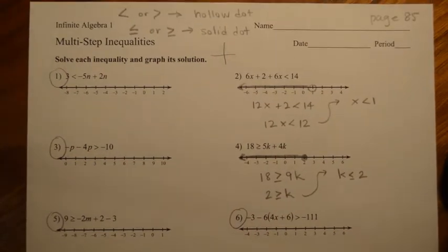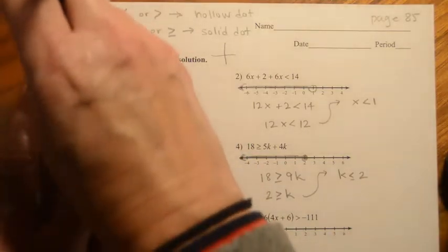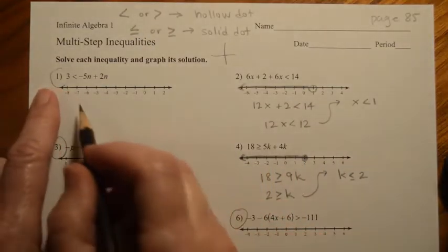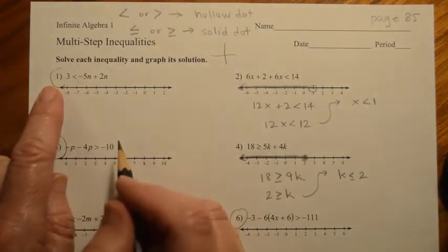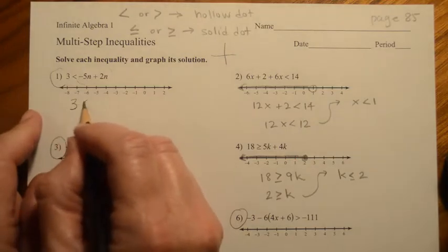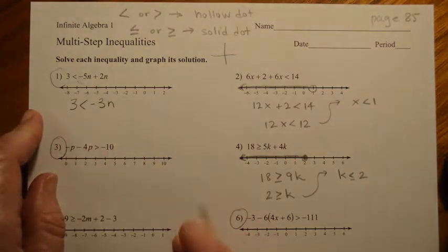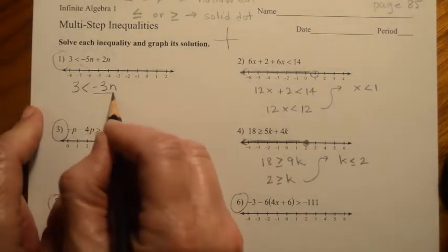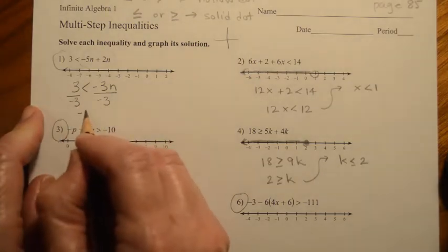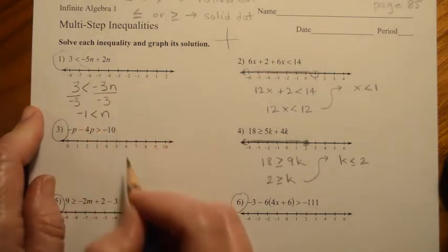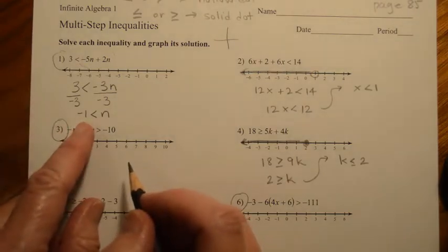So let's take a look at problem number one. For problem number one, we would just do what we think we should do. On the right side, we can combine like terms, and so we would say that 3 is less than negative 3n. If we were to continue like we normally do, we would think: let me divide both sides by negative 3, and then we would get negative 1 is less than n. But I want you to see that there is an error in what we just did here.